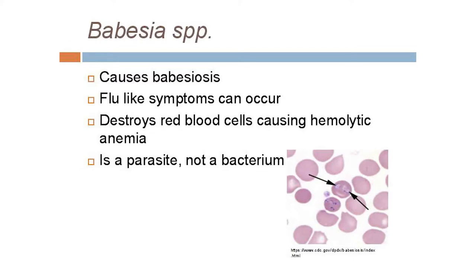I'll also talk about Babesia species. This is not transmitted by Dermocenter but is transmitted by Exotus scapularis. What's interesting about Babesia is that it's not a bacteria at all — it's a form of protozoan, an obligate intracellular parasite, which means it has to live inside and consume our red blood cells. This can cause something called hemolytic anemia, with fever-like symptoms, a great decrease in energy, and a host of other problems.